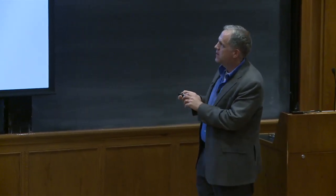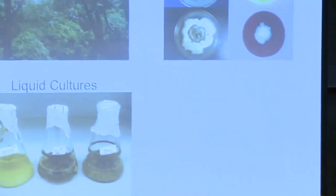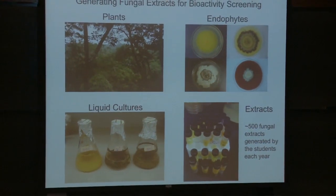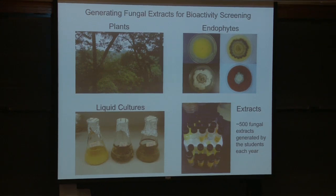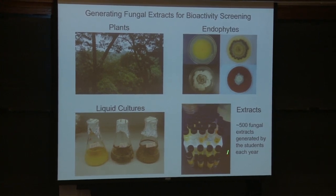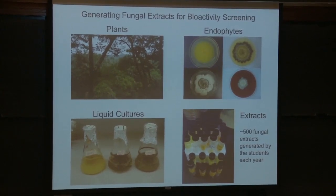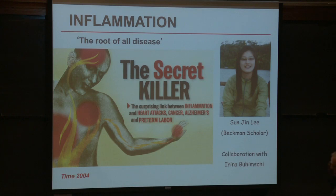Let me outline the pipeline: we go from plants to microbes, microbes in culture, and then from those cultures we create the essence of the microbe — an extract where we filter out the microbe, extract with organic solvents, and reduce the volume down to the 'perfume' of what that organism was making. Each year we generate about 500 different extracts across the class. We've done this for seven years, so we have a few thousand extracts from these novel organisms. Here are some stories spanning those seven years.